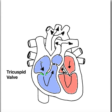The function of the tricuspid valve is: one, it closes. When blood enters the atrium, it fills the atrium. And then when the atrium contracts, it opens to allow blood to flow down into the right ventricle.